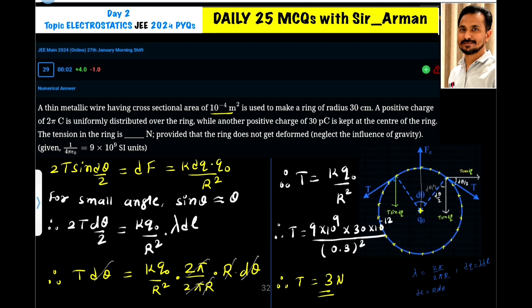Now just put the value of K. Here it is 9 × 10⁹. Then Q₀, which is the charge present at the center, is 30π coulombs, that is 30 × 10⁻¹². And the radius is 30 centimeters, means 0.3 meters, and it is R². So 0.3². If you solve this, you will get tension = 3 newtons. So your answer is 3. Thank you.